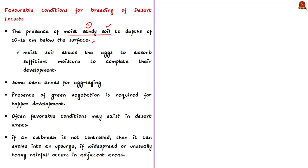Generally, the female will not lay eggs if the soil is not moist at about 5 to 15 centimeters below the surface. Before laying, the female will often probe the soil by inserting the tip of her abdomen to determine if there is enough moisture, because moist soil allows the eggs to absorb sufficient moisture to complete development. The second condition is that some bare areas for egg laying are required, and the third condition is that green vegetation shall be present for locust development.